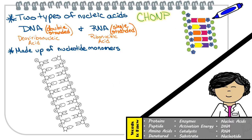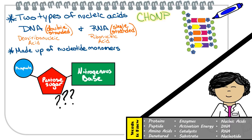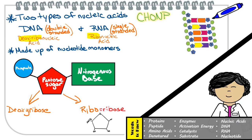This biomolecule has all five essential elements, referred to as CHOMP: carbon, hydrogen, oxygen, nitrogen, and phosphorus. Each nucleotide shares a common structure — the phosphate, the pentose sugar, and the nitrogenous base. The two nucleic acids are called deoxyribonucleic acid and ribonucleic acid. Deoxyribonucleic acid represents the type of sugar found in its nucleotides, which we call deoxyribose, while ribo represents the sugar called ribose. Ribose is a five-carbon pentagon-shaped sugar found in the nucleotides of RNA.